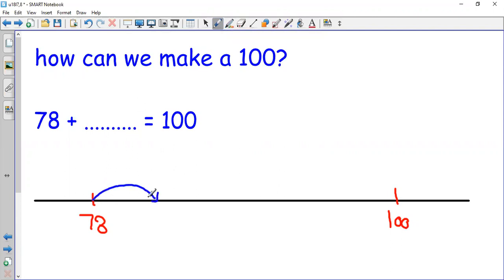I will go to the next multiple of 10, which is 80. After 78, the next multiple of 10 is 80. How many steps? I need two steps.